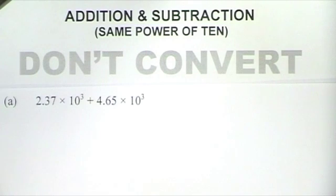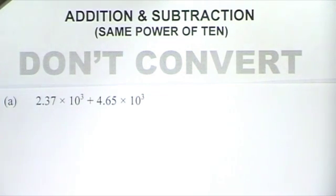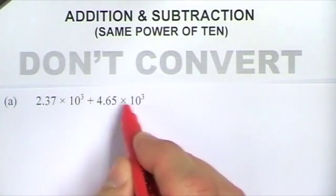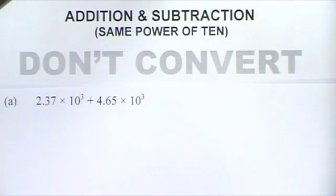This is our first question: 2.37 times 10 to the 3 plus 4.65 times 10 to the 3. The one thing you must remember when adding or subtracting numbers in standard form is you can only add or subtract if the powers of 10 are the same. In this case, both are times 10 to the 3, so they are the same and we can add those numbers together quite easily.